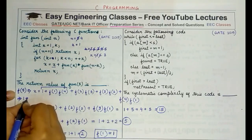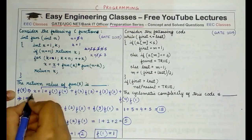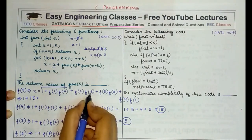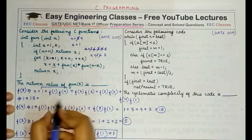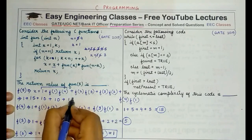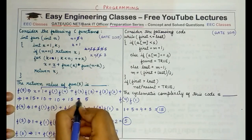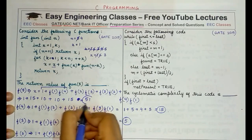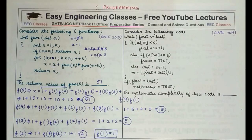For f(5): 1 plus f(1) times f(4) — f(4) is 15, f(1) is 1 — gives 15, plus f(2) times f(3) which is 2 times 5 equals 10, plus again 10, plus 15. The sum is 1 plus 15 plus 10 plus 10 plus 15 equals 51. So the answer to this question is 51.